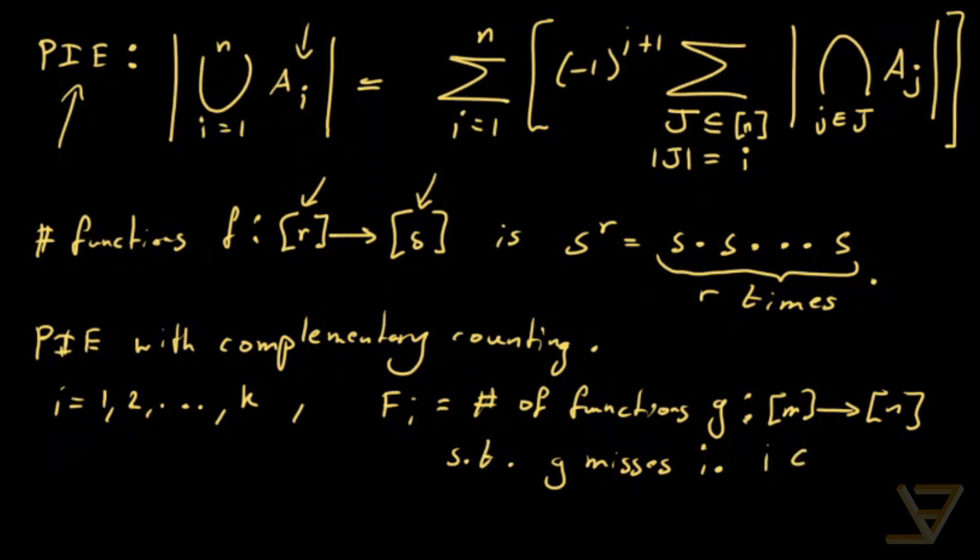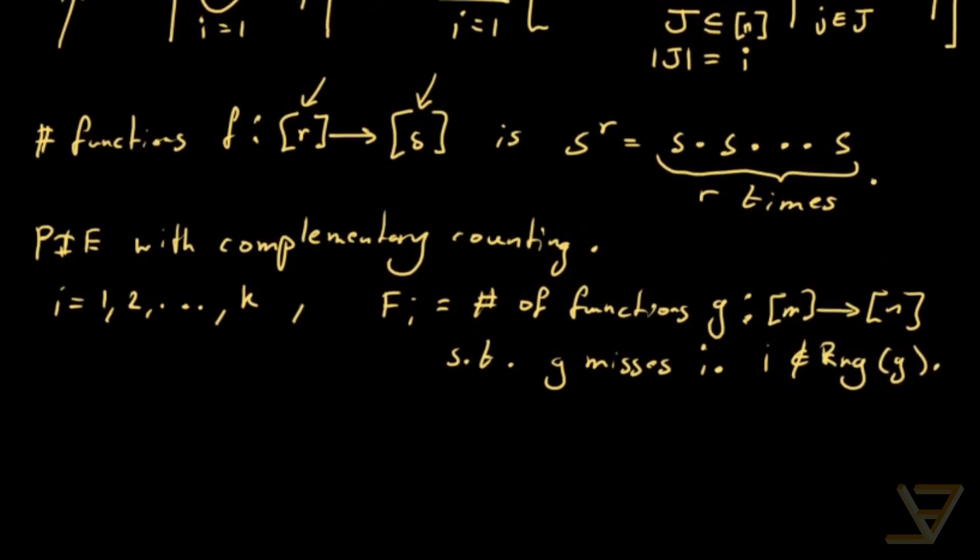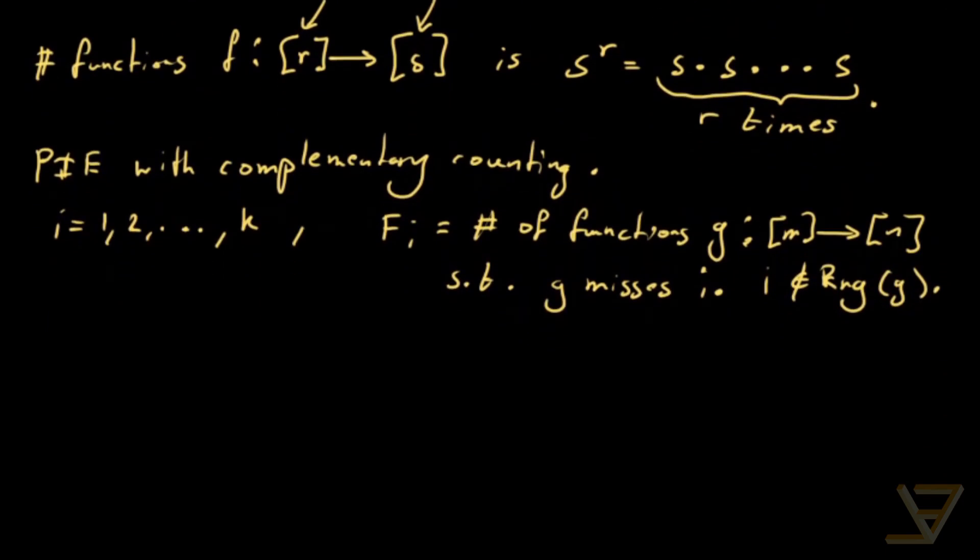So g doesn't hit i in the output. Meaning i is not an element of the range of g. And now what we want is for all the i's to get hit, so we just subtract it from the total number of possibilities. So the total number of functions is n to the power of m, as we said earlier. And what we do is that we subtract the union, the cardinality of the union of the Fi, and i goes from 1 through k.